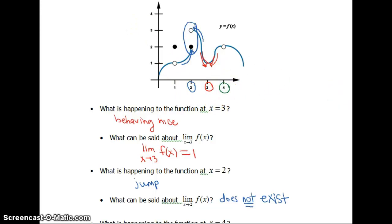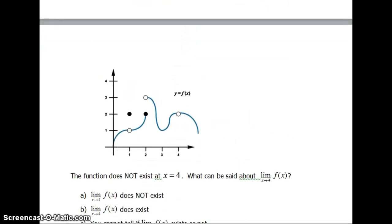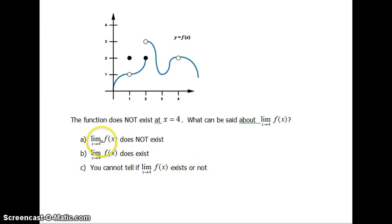So at 4, we have a hole in the graph. So again, from your algebra days, that hole means our function does not exist. Okay, so here's the next question. When a function does not exist at 4, okay, in this particular one, that's the case.